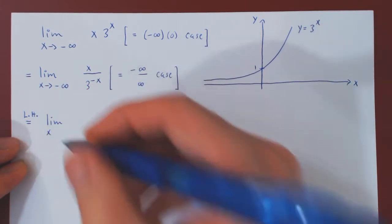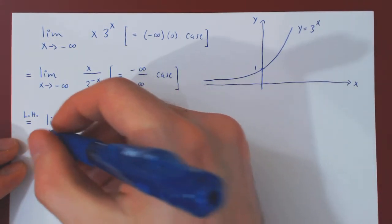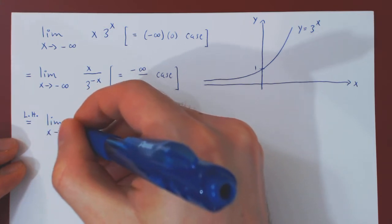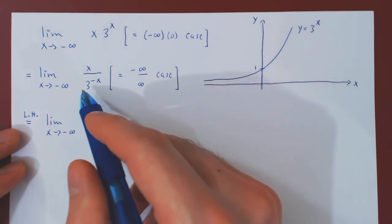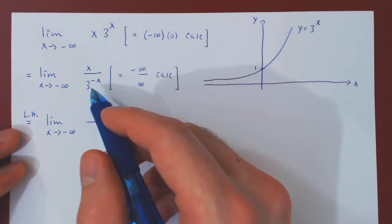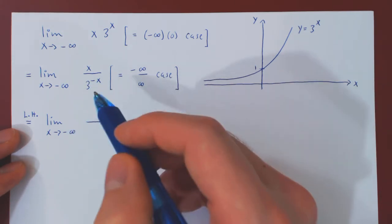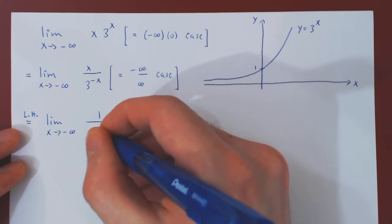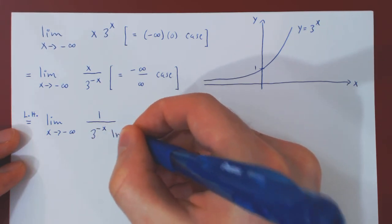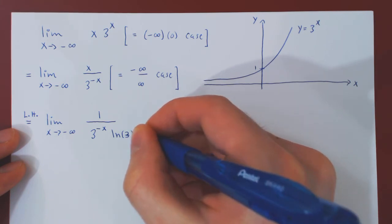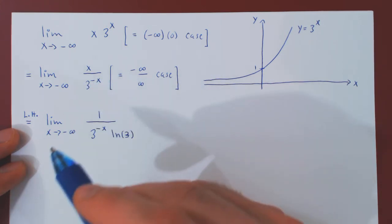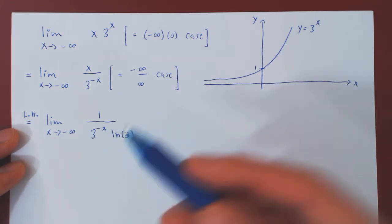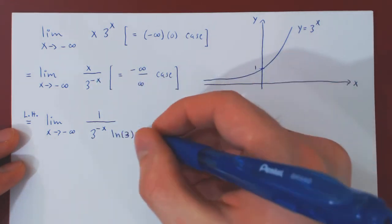x is still approaching negative infinity, so the derivative of x is 1. Then, the derivative of 3 to the minus x, well, we have here an exponential function, the base is 3, the derivative of an exponential function is itself times the ln of the base, so ln of 3. But that's just the derivative of the exponential function 3. There's still a negative x left over. By the chain rule, we have to multiply this by the derivative of the argument, which is simply negative 1.